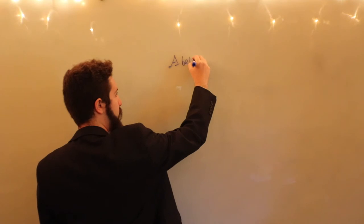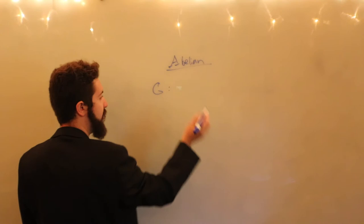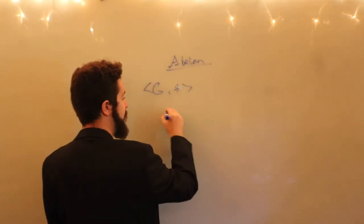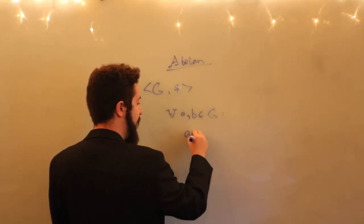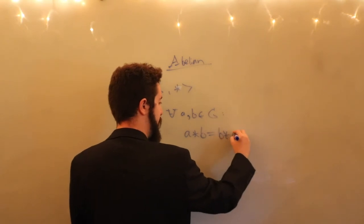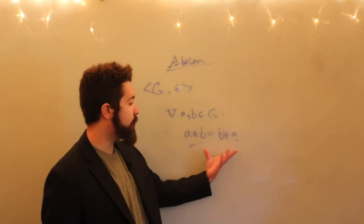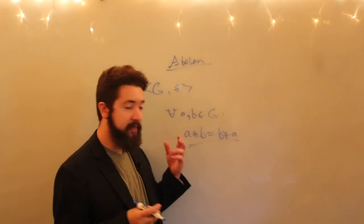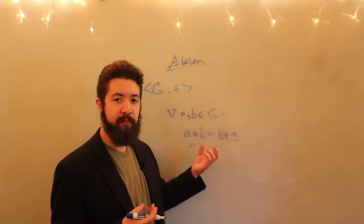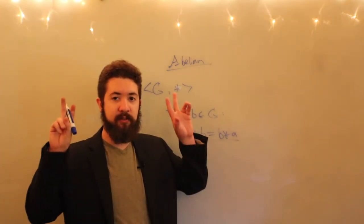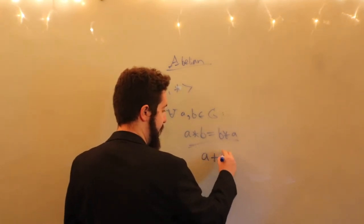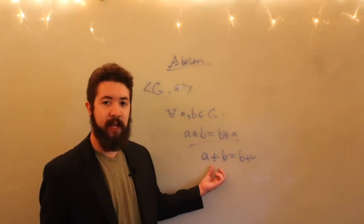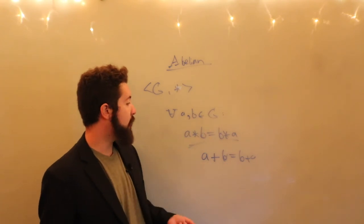There's a special type of group called an abelian group. An abelian group is just a group with an operation such that for all A and B in G, A star B equals B star A. You should already know this as the commutative property of multiplication or addition. Whenever the commutative property holds, we tend to think of the group operation as an addition operation, writing A plus B equals B plus A. We call this an additive group or an abelian group.